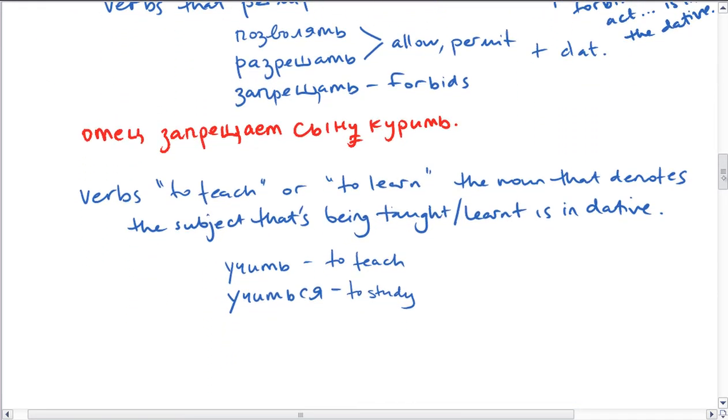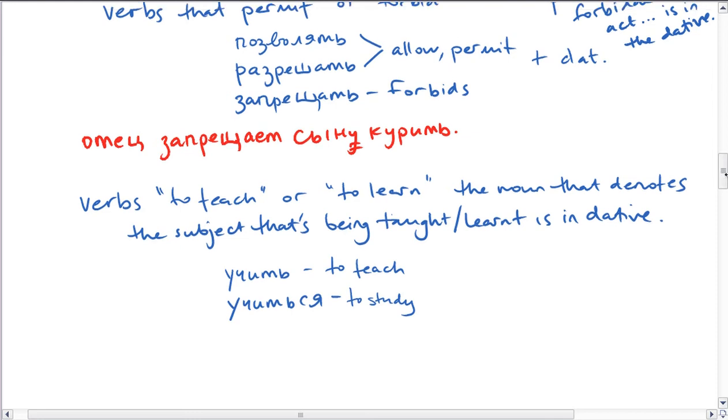So again, the recipient or the beneficiary of the action. We could just look at one example. Отец запрещает сыну курить. So the father forbids his son to smoke. So the person receiving that is the son, and he's in the datum case. And then after these verbs for to teach or to learn, the noun that denotes the subject that's being taught or learnt is in the datum case. So учить, to teach. So we've got отец учит дочерей русскому языку. So the father teaches his daughters - they're in the accusative case - and the subject is going to be in the datum case: русскому языку. So dative case is the subject that's being taught.